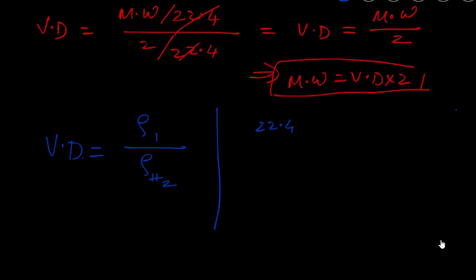The mass of oxygen is 32. For the same volume, you take the density of oxygen and divide by that of hydrogen (mass = 2). Essentially, it's a ratio of their molar masses.